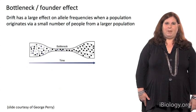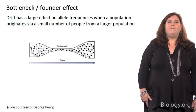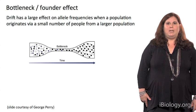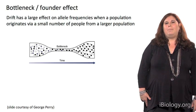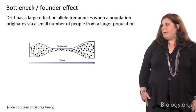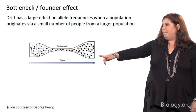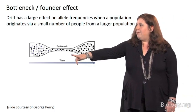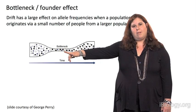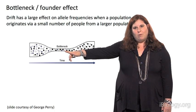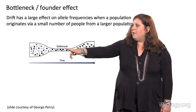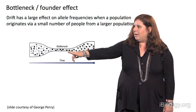Other important terms in population genetics are bottleneck and founder effects. And this is because genetic drift has a large effect on allele frequencies when a population originates via a small number of people from a larger population. Here we have an example of a bottleneck. And what a bottleneck means is that there's been a decrease in population size at some time in the past. You can think of it as a population crash.